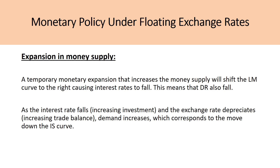So let's talk about an expansion in the money supply under a floating exchange rate. A temporary monetary expansion that increases the money supply will shift the LM curve to the right, causing interest rates to fall. This means that the domestic returns will also fall. As the interest rate falls, it increases investment, and the exchange rate depreciates, therefore increasing the trade balance. Demand increases, which corresponds to the move down the IS curve.